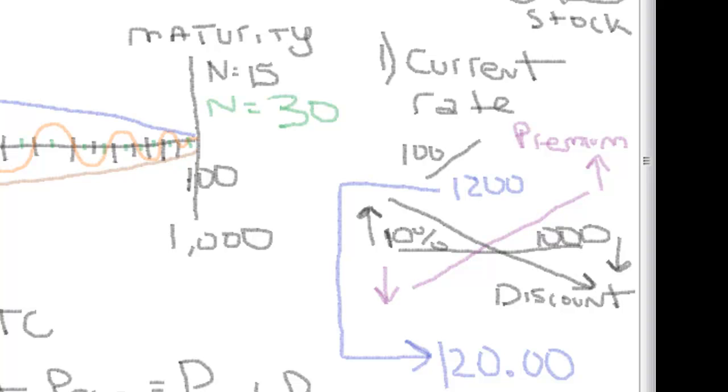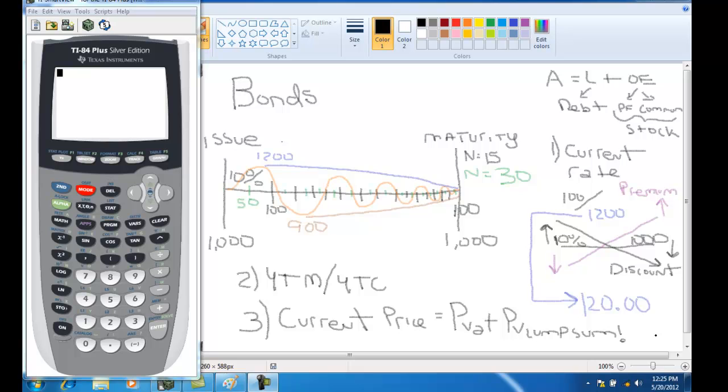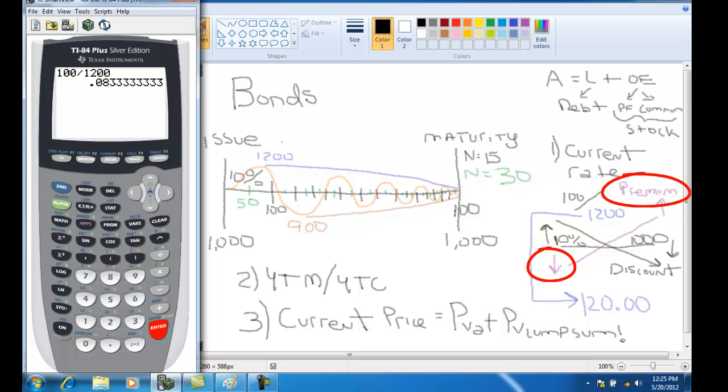Now the first and most simple calculation is current rate. It is just the annual coupon payment. In this case, we're going to use the $100 and divide it by its current price. We can see that the current rate is 8.33%, which tells me that the current rate is below the 10%. Therefore, this bond is trading at a premium.